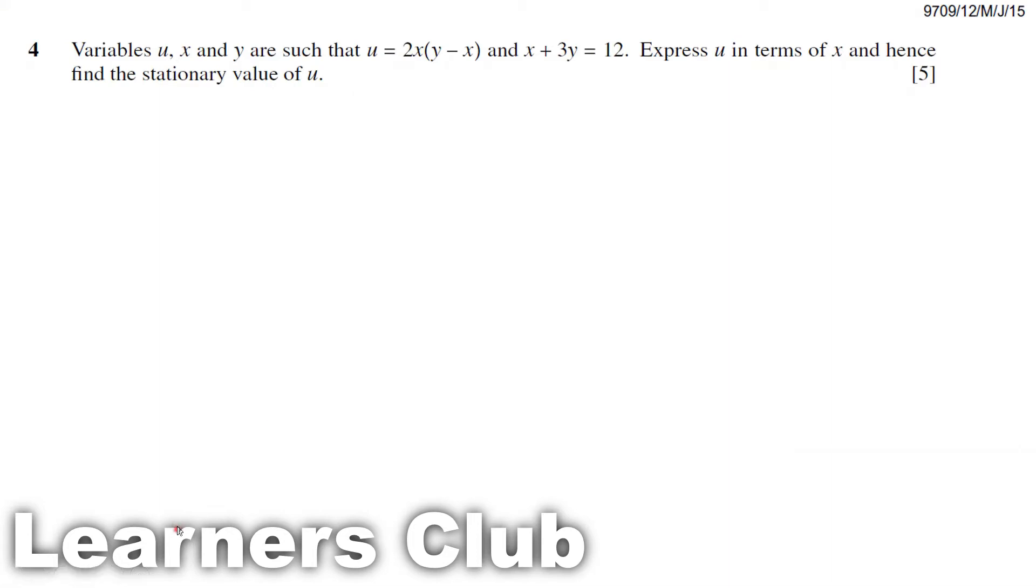In this question, they have given two equations. One is u in terms of x and y, the other one x and y. We have to express u in terms of x. To start, first we can make y as the subject in terms of u and x, then substitute the value into the second equation to get u in terms of x and make u as the subject. I'll show you step by step.